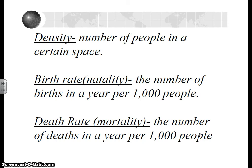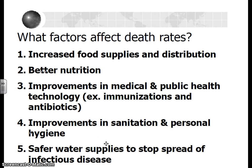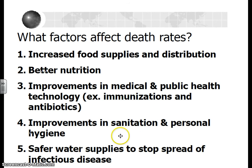Density means how many people there are in a smaller or bigger amount of space. Birth rate is the number of births per 1,000 people — not 100. Death rate is the number of deaths in a year per 1,000 people, again, not 100. So how do you affect death rates? You can increase food supply, do better nutrition, increase access to medical technology, education, public health facilities. There might also be improvements in sanitation and culture — just the culture of personal hygiene.